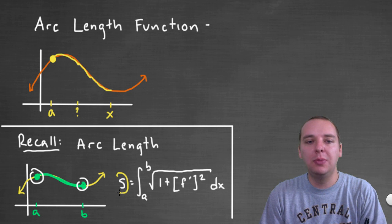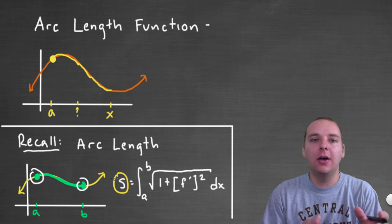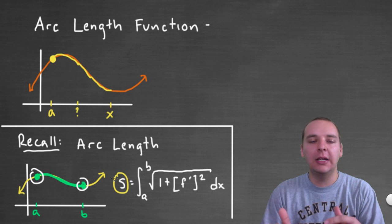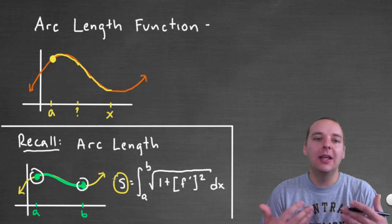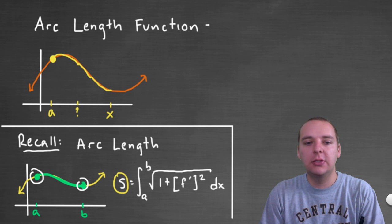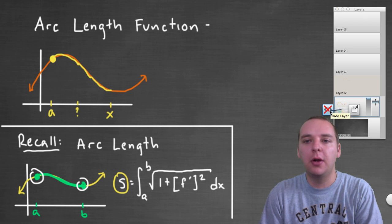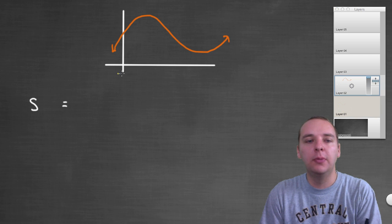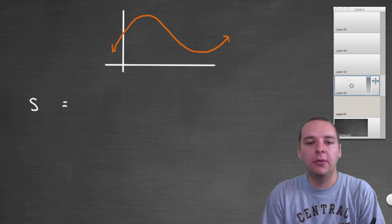And so it won't necessarily be s, it'll be s of x, it'll be a function of x. So whenever I tell it an x, then it will compute the arc length. So just based off of that discussion, you can probably guess a big part of what's going to go into this formula here for the arc length.